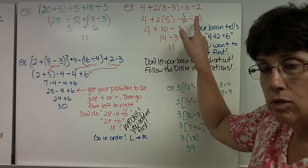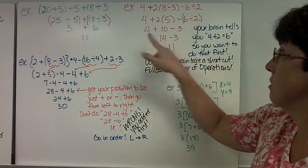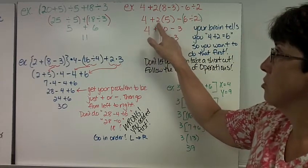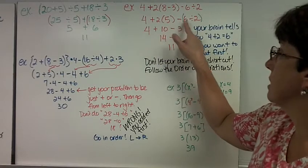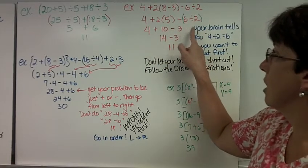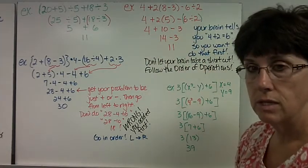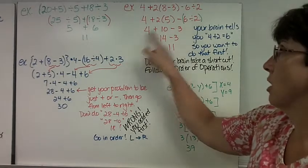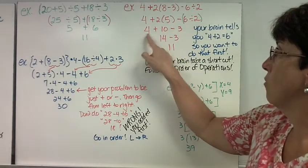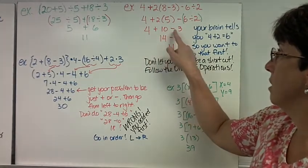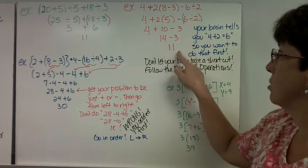I put parentheses around what I'm going to do first, the multiplication and the division. 4 plus 2 times 5 is 10 minus 6 divided by 2 is 3. Now the only thing left in my problem is addition and subtraction. So I go from left to right. 4 plus 10, 14 minus 3. 14 minus 3 is 11.